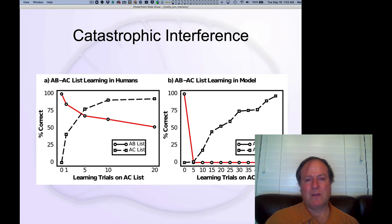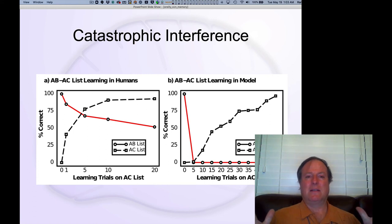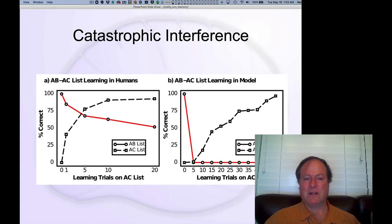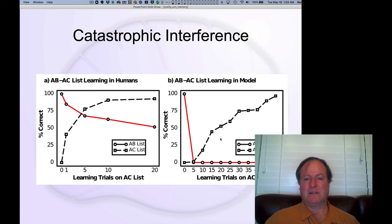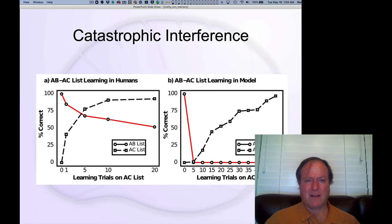This was first documented by McCloskey and Cohen in 1989, and they made a big deal about it, saying this means that neural networks are terrible — they can't really be a good model of memory because look, here's what human memory looks like, and here's what these neural networks do. This is a terrible model of memory. And people always have it in for networks — therefore, you shouldn't study networks.